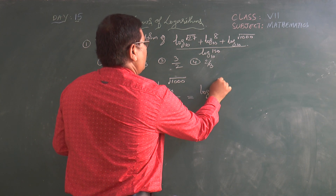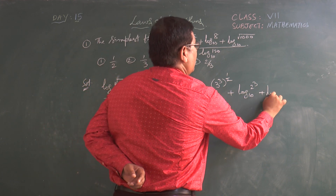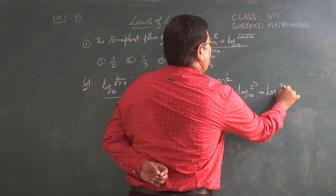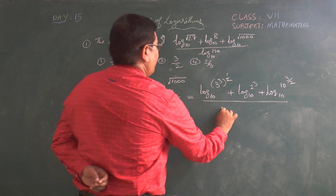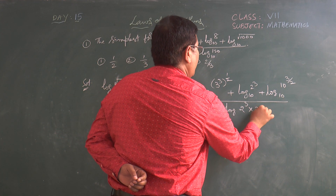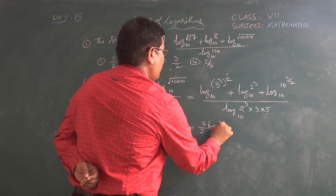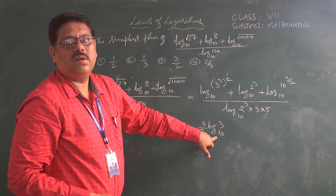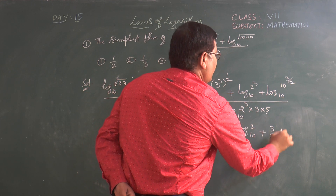We write log(3³)^(1/2) to the base 10 plus log 2³ to the base 10 plus log(10³)^(1/2) to the base 10, since 1000 = 10³. Applying the power rule, the numerator becomes 3/2 log 3 (base 10) plus 3 log 2 (base 10) plus 3/2 log 10 (base 10). For the denominator, 120 = 2³ × 3 × 5, so log 120 = log(2³ × 3 × 5) to the base 10.